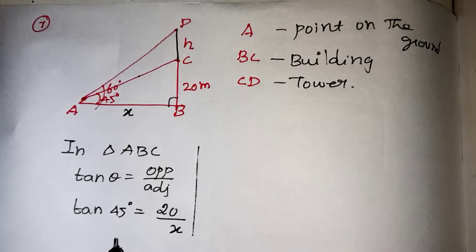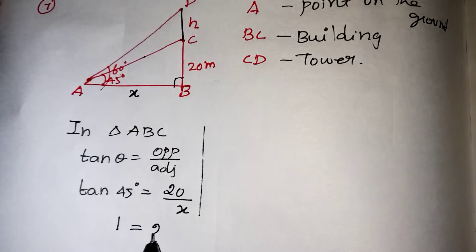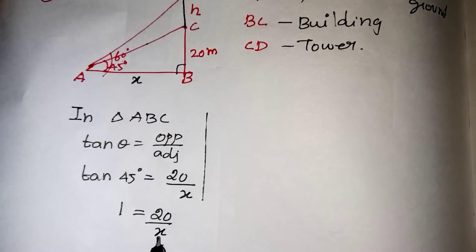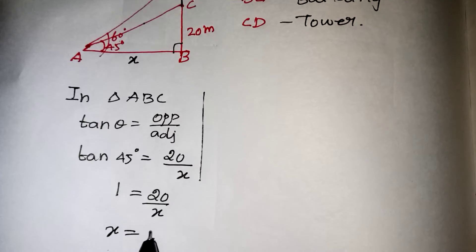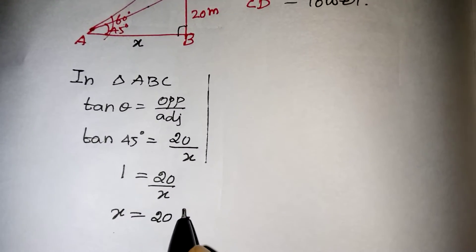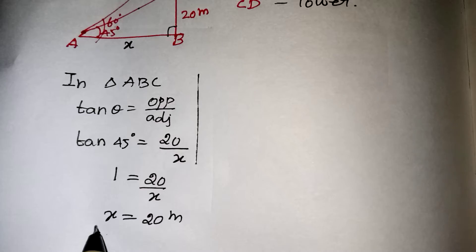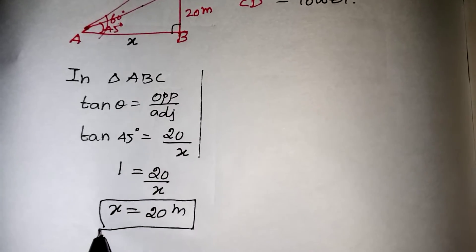Tan 45 value 1 from the table, 20 by x, denominator x take it to other side, multiplication 1 into x will be x only. So 20 meter, we got the x value as 20 meter.